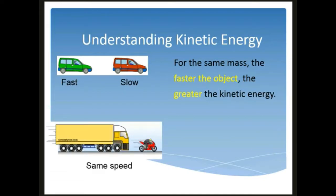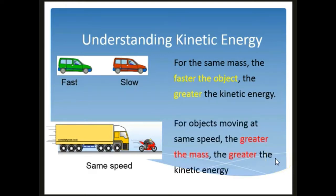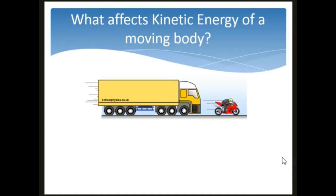Looking at a truck and a motorcycle: the truck has more mass. If both move at the same speed, the truck has more kinetic energy. For objects moving at the same speed, the greater the mass, the greater the kinetic energy. So kinetic energy depends on two things: the mass of the body and the speed of the moving body.